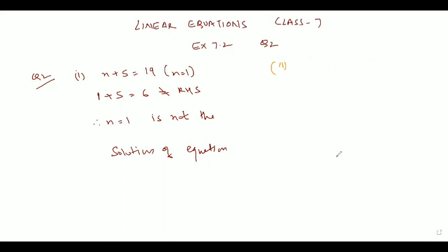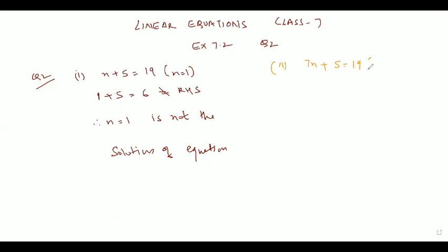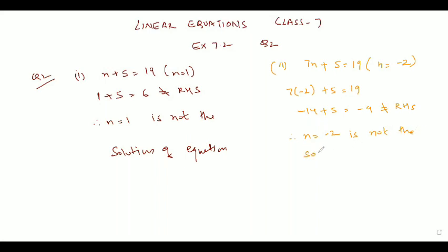In the second part, the equation is 7n plus 5 equal to 19, where n is equal to minus 2. So we would write: 7 times (minus 2) plus 5 equal to 19. It becomes minus 14 plus 5, that is minus 9, which is not equal to RHS. Therefore, n is equal to minus 2 is not the solution of the given equation.